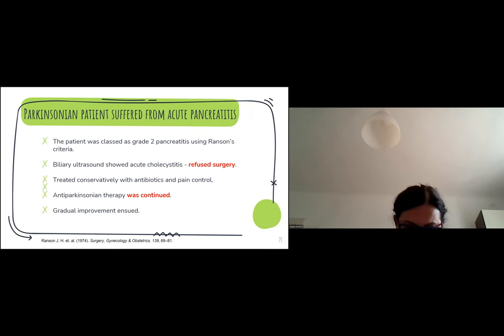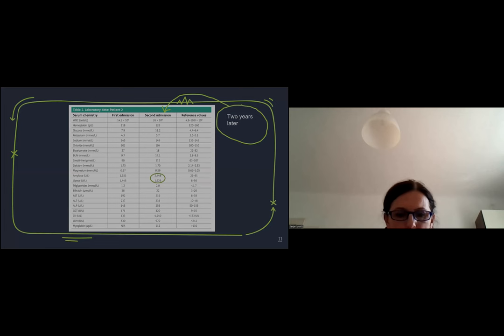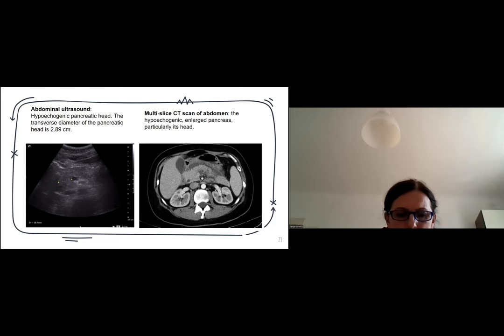Years later, the patient presented to the emergency room again with clinical and biochemical signs of recurrent pancreatitis, Ranson's grade 3. From the biochemical findings, we see that amylases and lipases are multiplied more than in the first state. Imaging studies showed signs of cholecystopancreatitis with enlarged gallbladder, thickened wall, and pancreatic and peripancreatic edema.